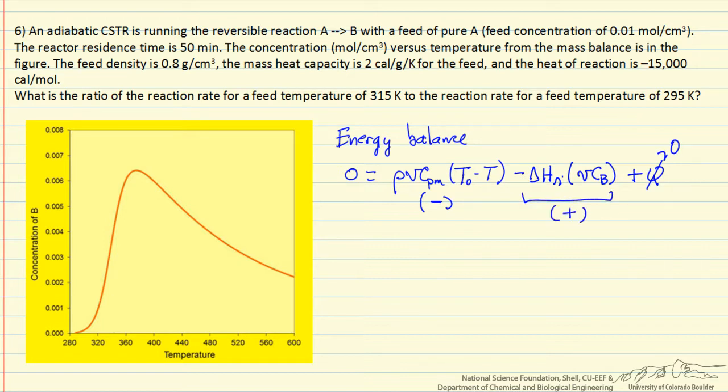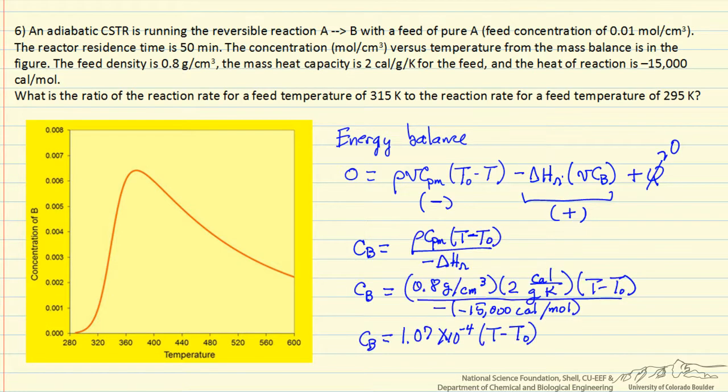So we can take this energy balance and just write it in terms of concentration as a function of temperature. We're going to get a linear relation between the two. So I've taken the equation and note that I can cancel the volumetric flow rates from both sides. I've rearranged to solve for the concentration of B. Notice also I switched around T minus T zero and kept the signs consistent.